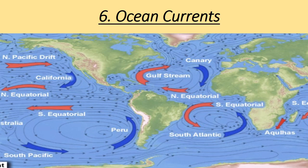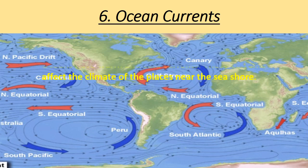Ocean currents. Oceans have warm and cold currents. These currents affect the climate of places near the seashore.